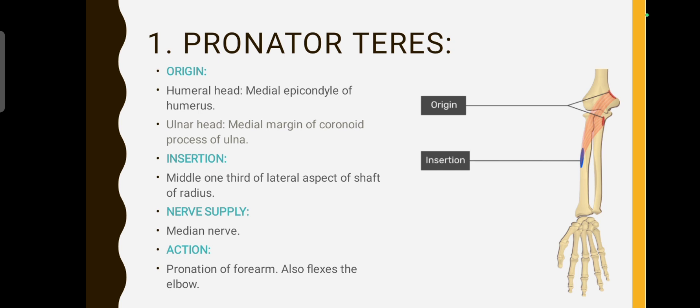The muscles of the forearm have a common origin at the medial epicondyle of the humerus, and the nerve supply to these is the median nerve.